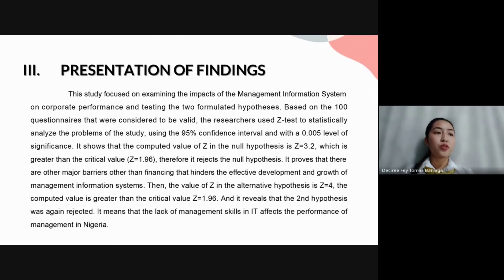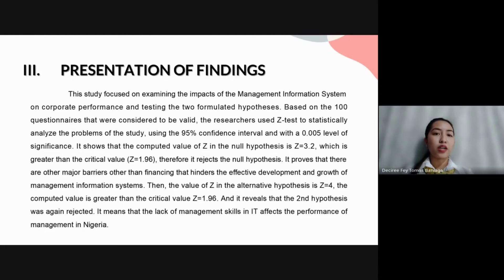It proves that there are other major barriers other than financing that hinder the effective development and growth of management information systems. For the second hypothesis, the computed value of Z = 4 is greater than the critical value Z = 1.96, so the second hypothesis was also rejected. It means that the lack of management skills in IT affects the performance of management in Nigeria.